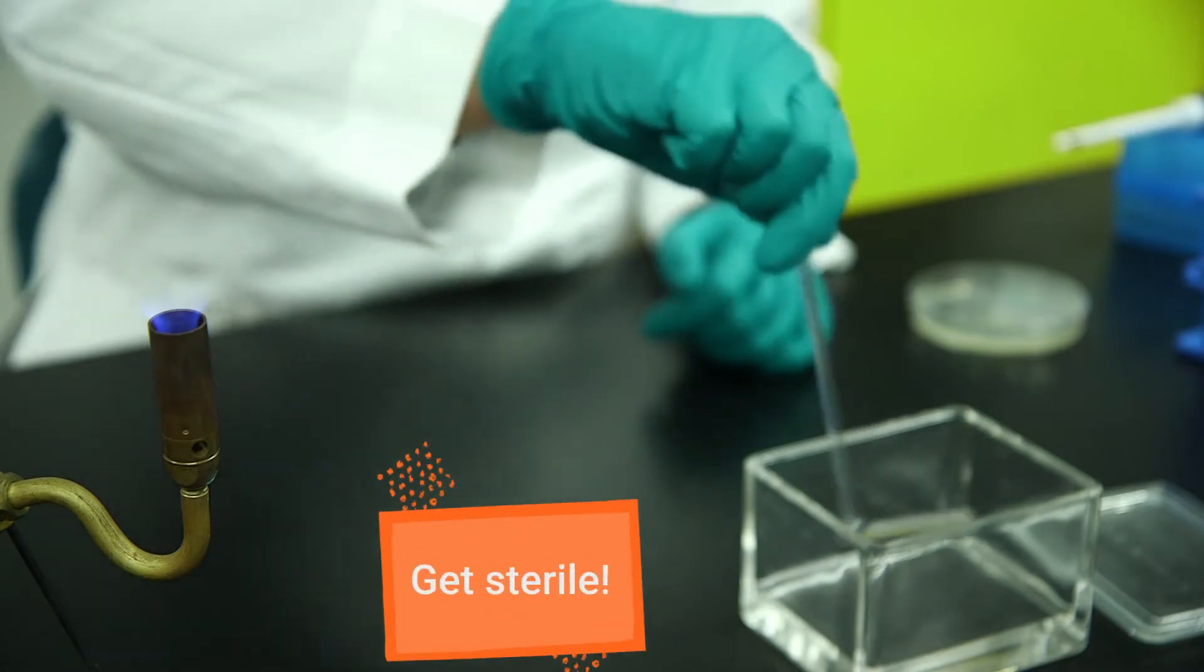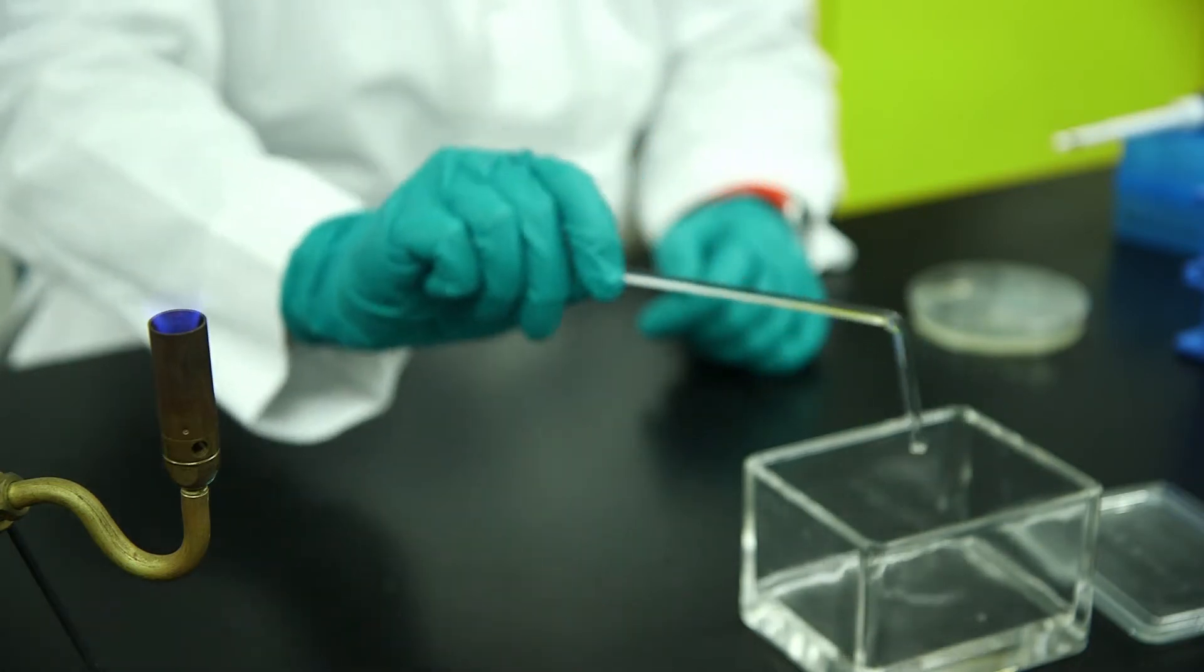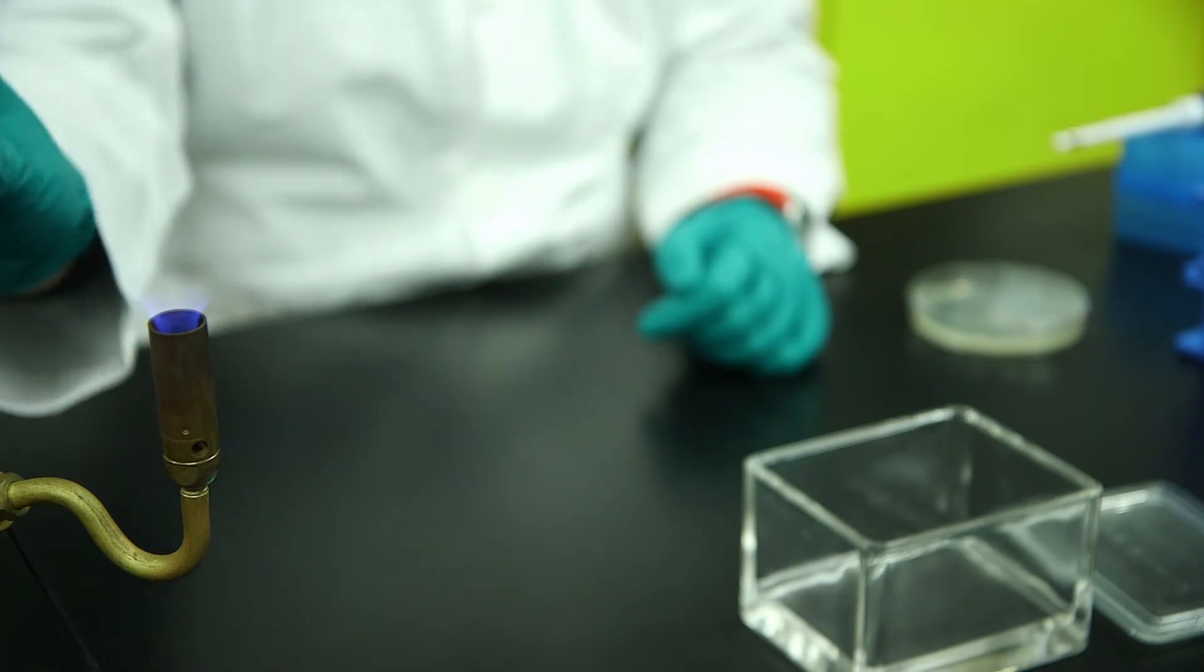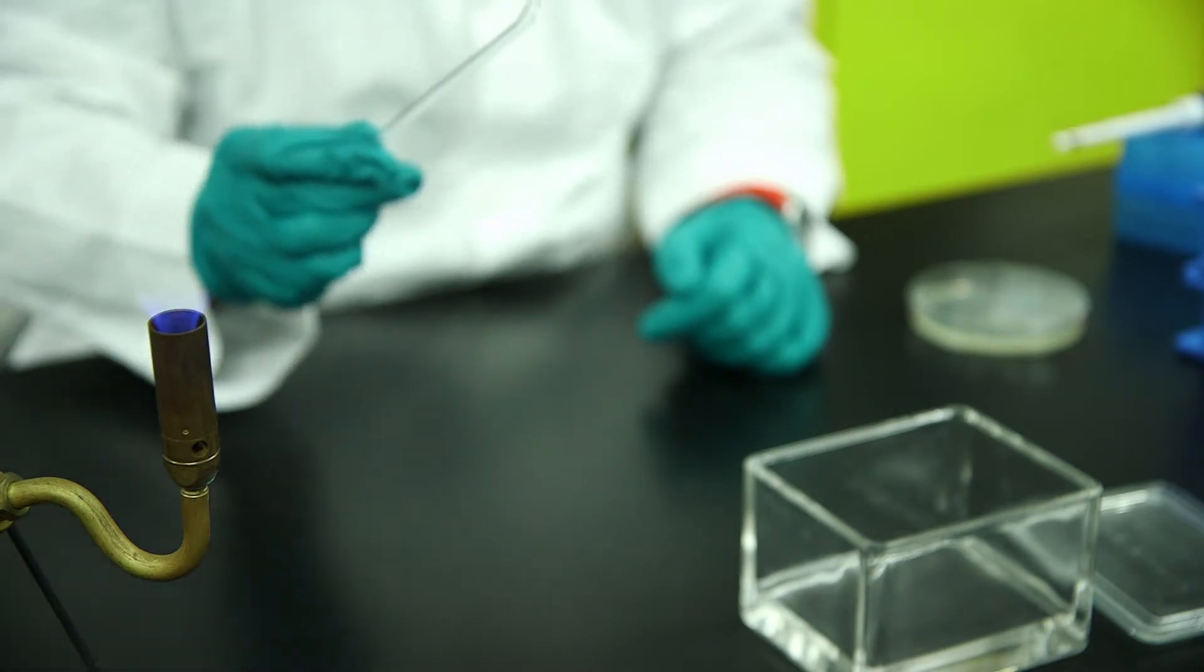Now, sterilize your spreader bar by dunking it in ethanol and then holding it above the flame. A quick second will be enough. The alcohol and heat should kill anything on the bar.